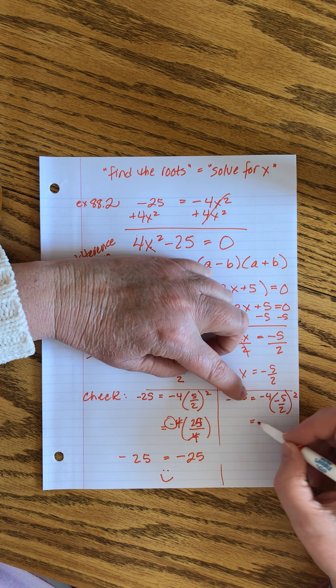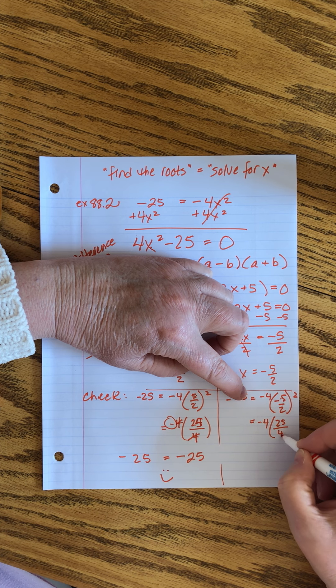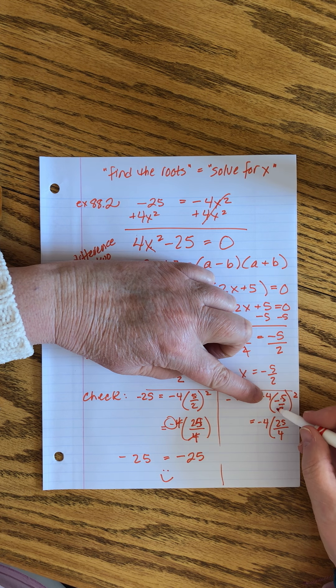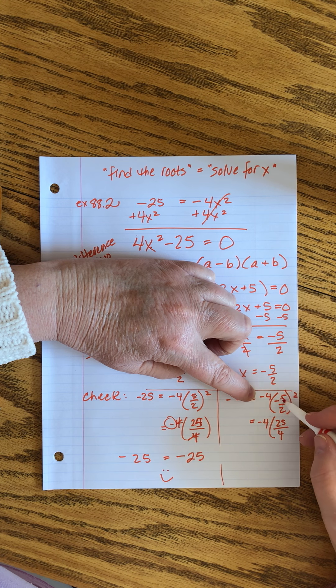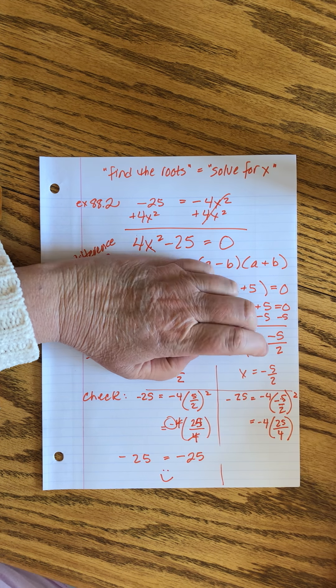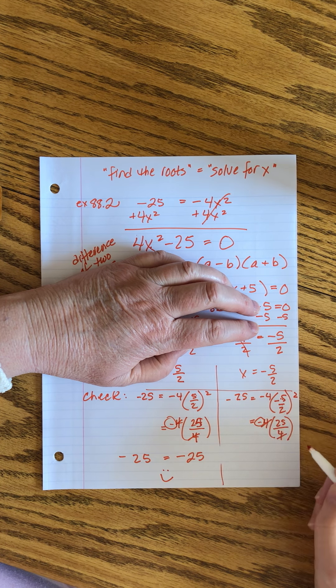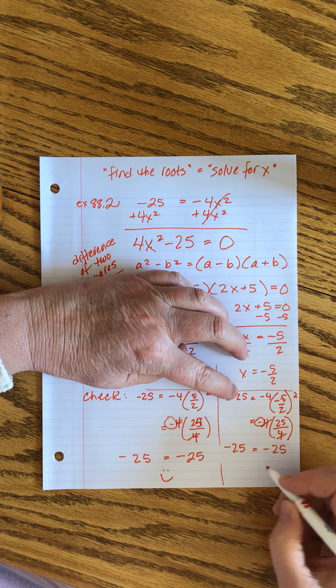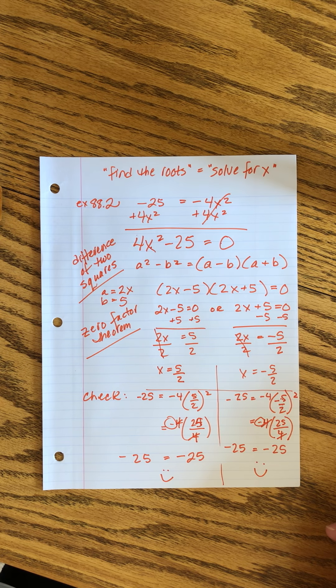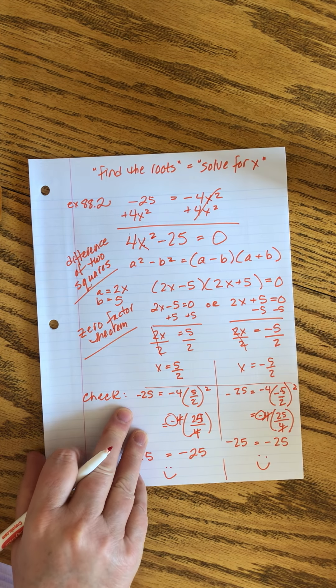And the same thing over here. It's minus 4 times, and then this squared is 25 over 4. Remember that the square only relates to what's in the parentheses. When we have a square, we square the numerator and the denominator. These cancel, the minus sign is left, I get minus 25. That one works too.